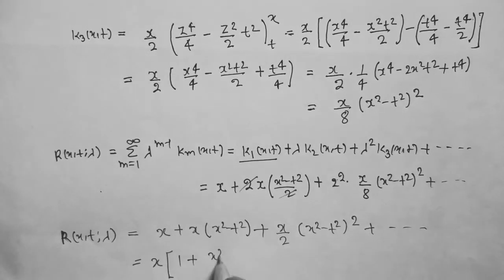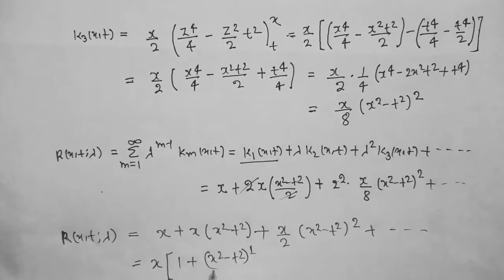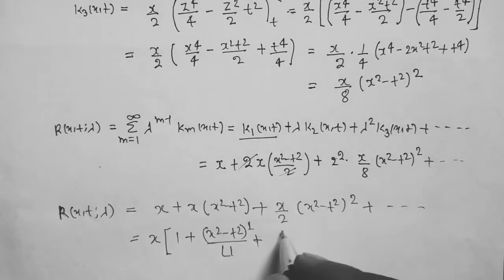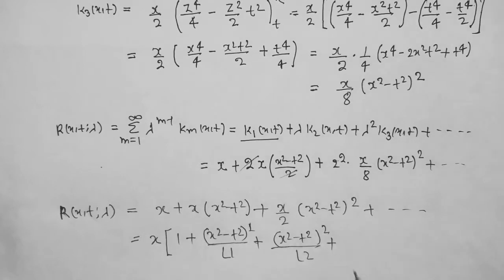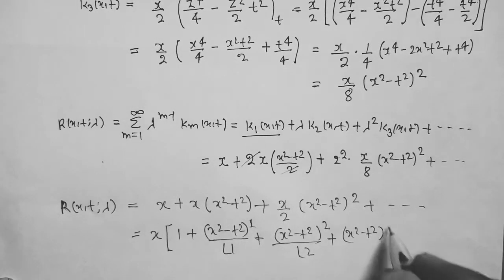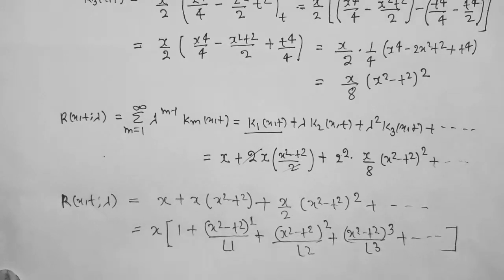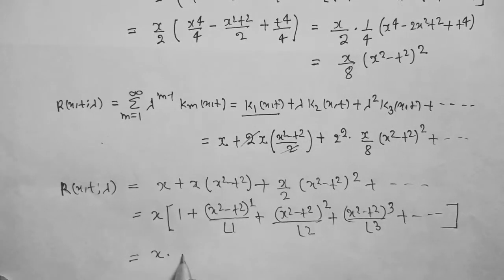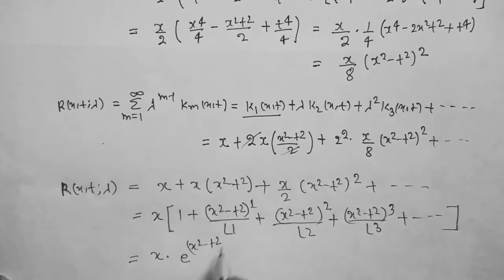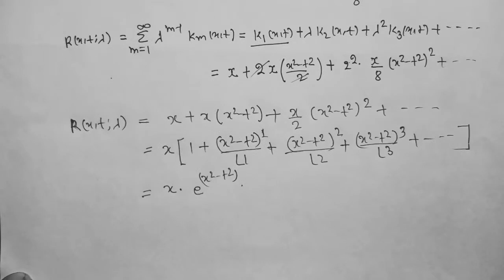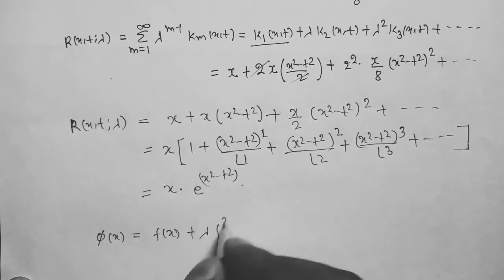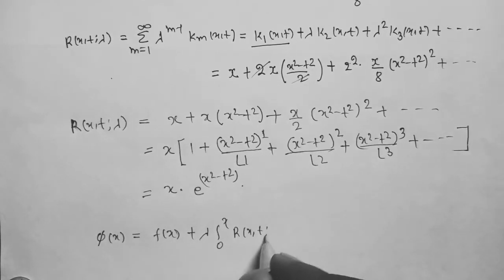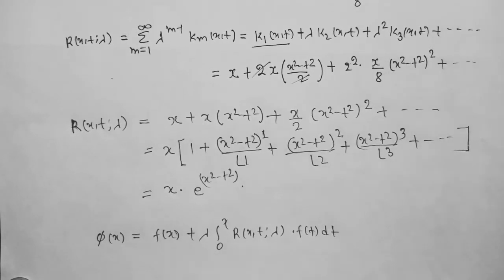The resolvent kernel series becomes x times [1 plus (x² minus t²)/1! plus (x² minus t²)²/2! plus (x² minus t²)³/3! plus ...], which equals x·e^(x² minus t²). The solution of the Volterra integral equation of the second kind is φ(x) = f(x) plus λ·integral from 0 to x of R(x,t,λ)·f(t) dt.